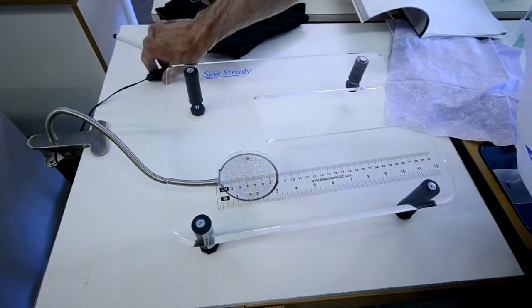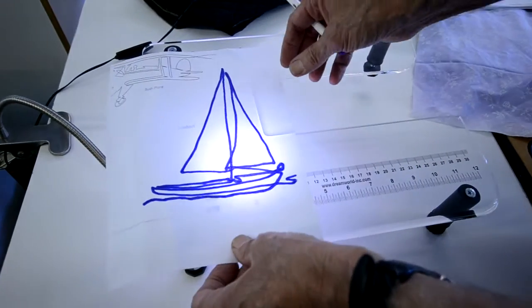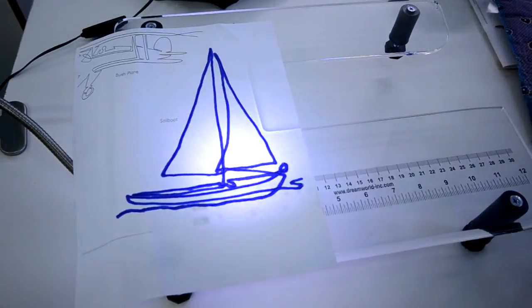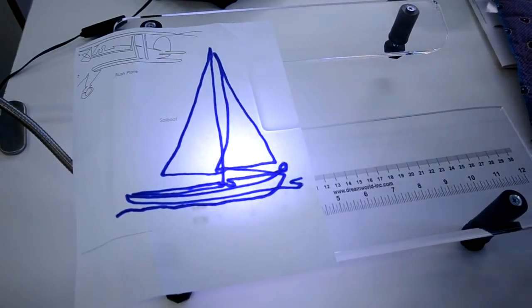We're making a simple light table here with the Sew Steady table, and we're going to put that on top. Then we're going to lay our fabric on there.